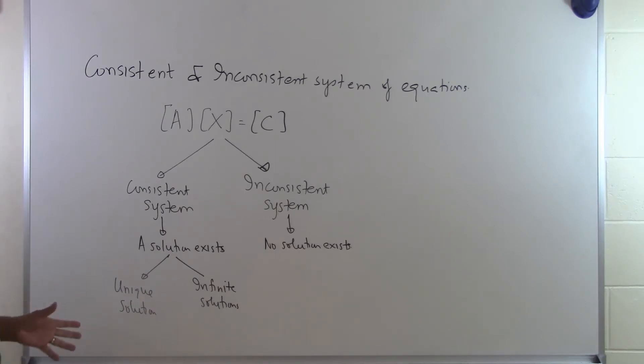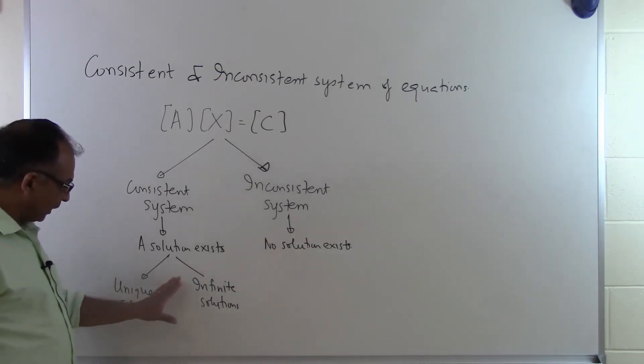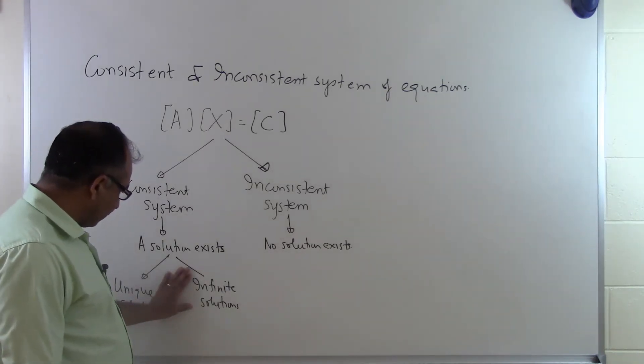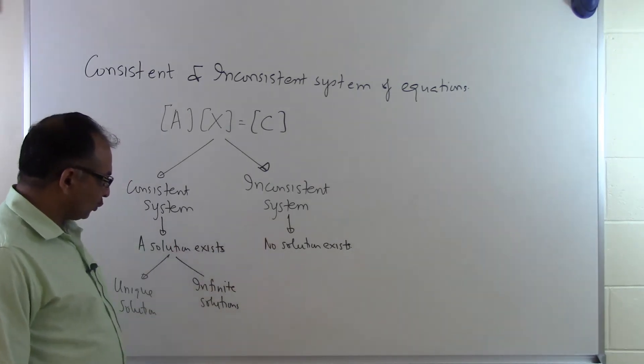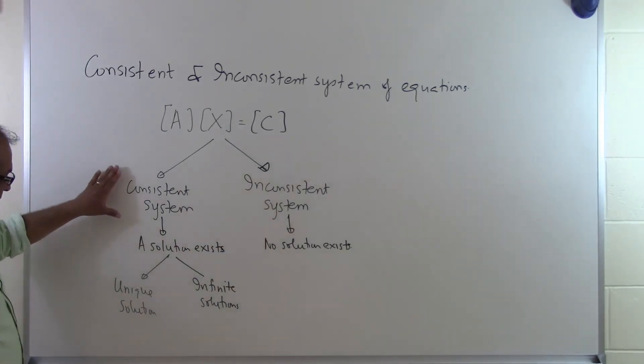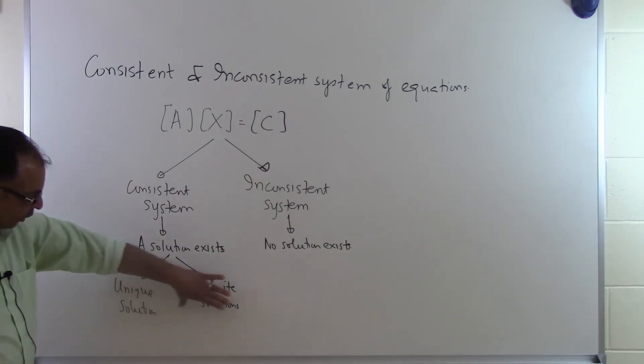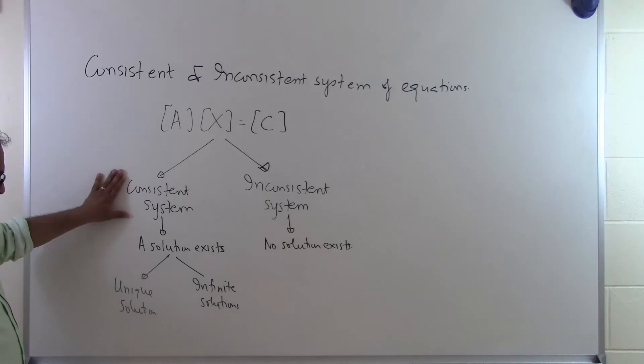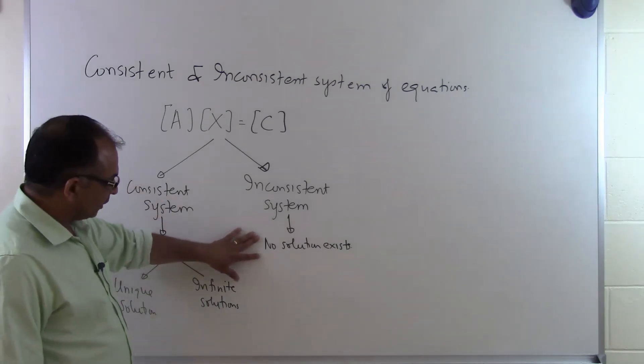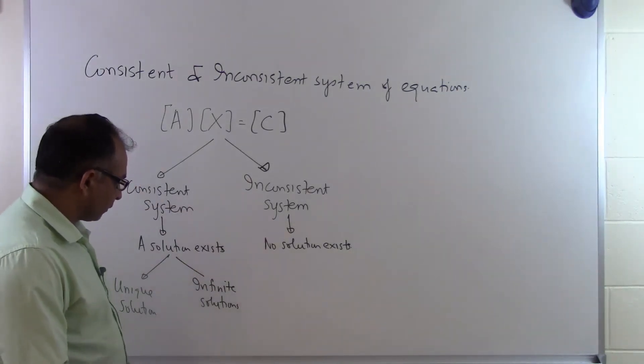But at this time, what you got to understand is that somebody gives you a system of N equations and unknowns, three possibilities arise. You're either going to get a unique solution or you're going to get infinite solutions or you're going to get no solution. Now if the system has a solution, either a unique solution or infinite solutions, then it's called a consistent system of equations. If no solutions exist, then it's called an inconsistent system of equations.